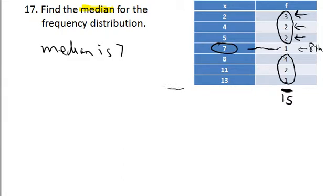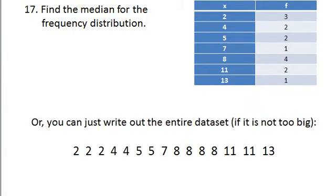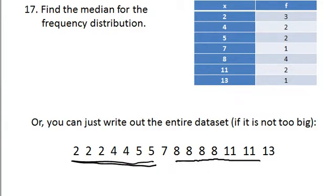Now if that's a little confusing, you can also simply write them all out. If you just want to forget that and say, well I'm just going to write them out — there are three twos, two fours, two fives, and so on. Once you get them written out, you can again see that there are seven values here and seven values here, so the middle value is seven. Either way you look at it, the median is seven.